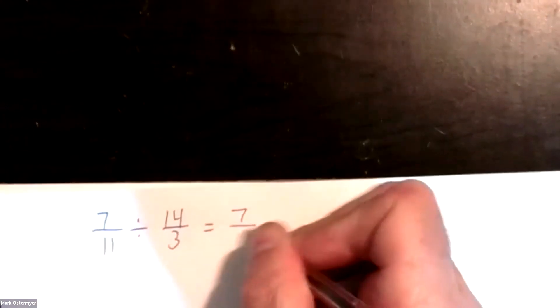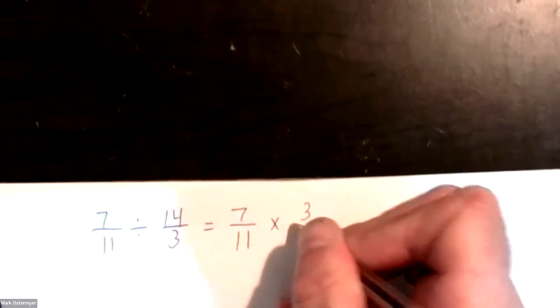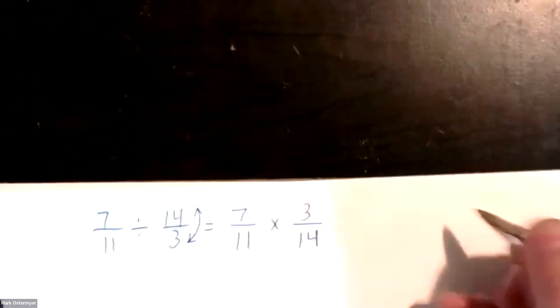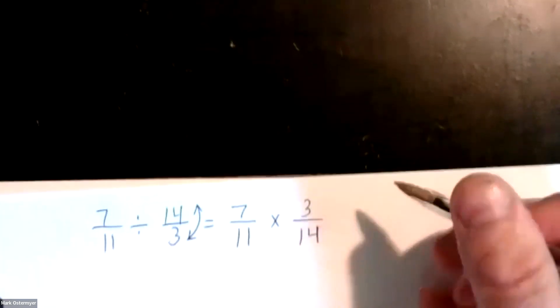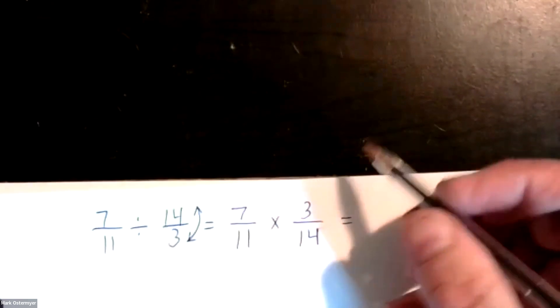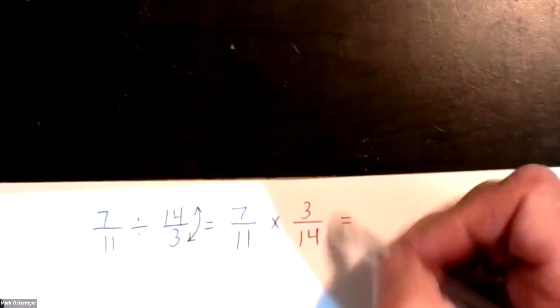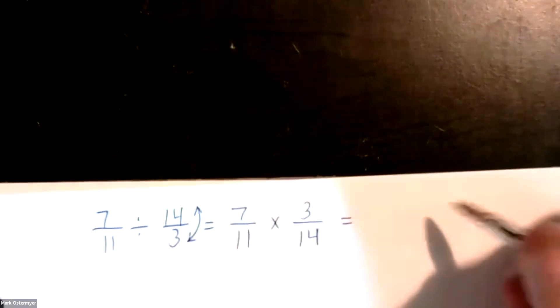All right, so two fourteen over three — it takes seven-elevenths divided by fourteen over three, thirteen thirds. So this is seven-elevenths times three over fourteen — you have to flip the second fraction upside down. Do you want to multiply across first then reduce, or cross-cancel first?